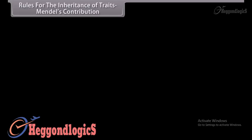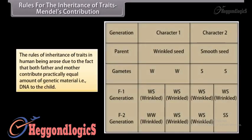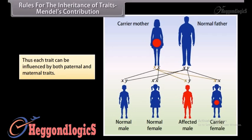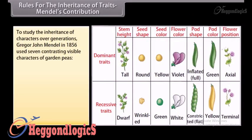The rules of inheritance of traits in human beings arose due to the fact that both father and mother contribute practically equal amounts of genetic material — that is, DNA — to the child. Thus, each trait can be influenced by both paternal and maternal traits. To study the inheritance of characters over generations, Gregor John Mendel in 1856 used seven contrasting visible characters of garden peas.